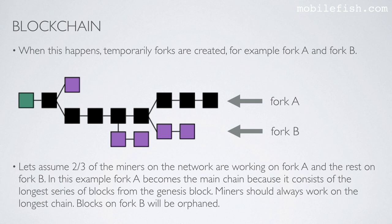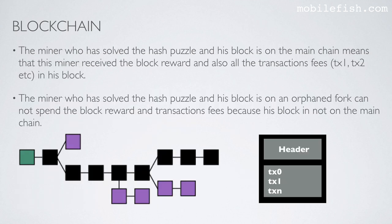Let's assume two-thirds of the miners on the network are working on fork A and the rest on fork B. Fork A becomes the main chain because it consists of the longest series of blocks from the Genesis block. Miners should always work on the longest chain. Blocks on fork B will be orphaned. The miner whose block is on the main chain receives the block reward and all the transaction fees in his block. The miner whose block is on an orphan fork cannot spend the block reward and transaction fees because his block is not on the main chain.